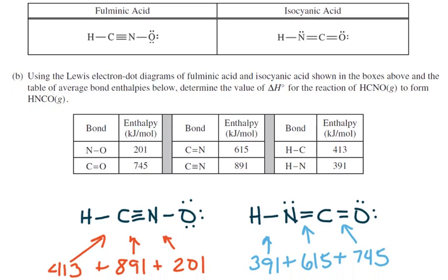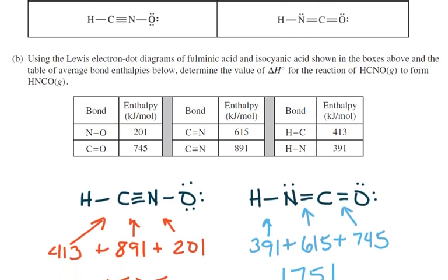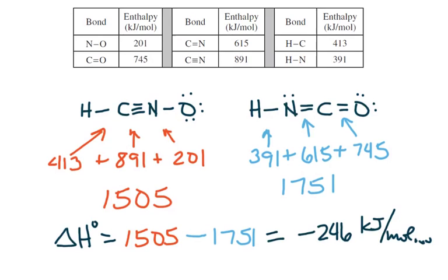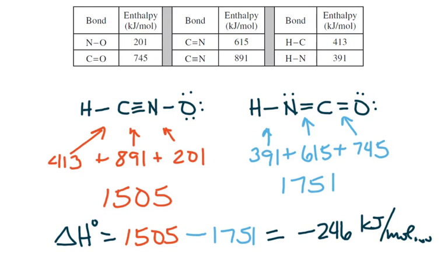Well, we can do this with bond energies, and I've redrawn my molecules over down here so we can look at the bonds. And now it's just a matter of looking at our charts. So there's an HC bond, so that's this one, 413, and a CN triple bond, that's this one, and let me go back and do these with the right colors. So HC and CN, and there's an NO single bond, that's this guy.